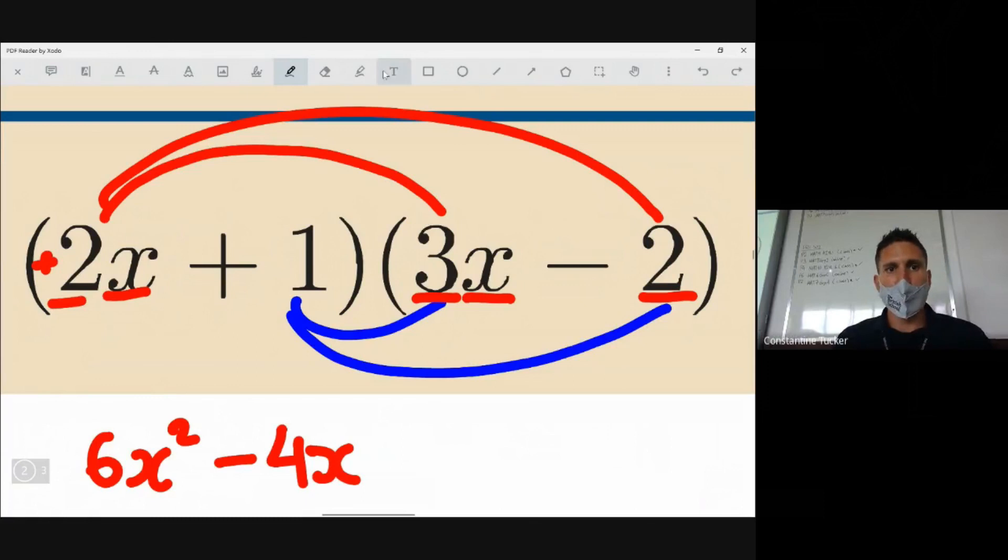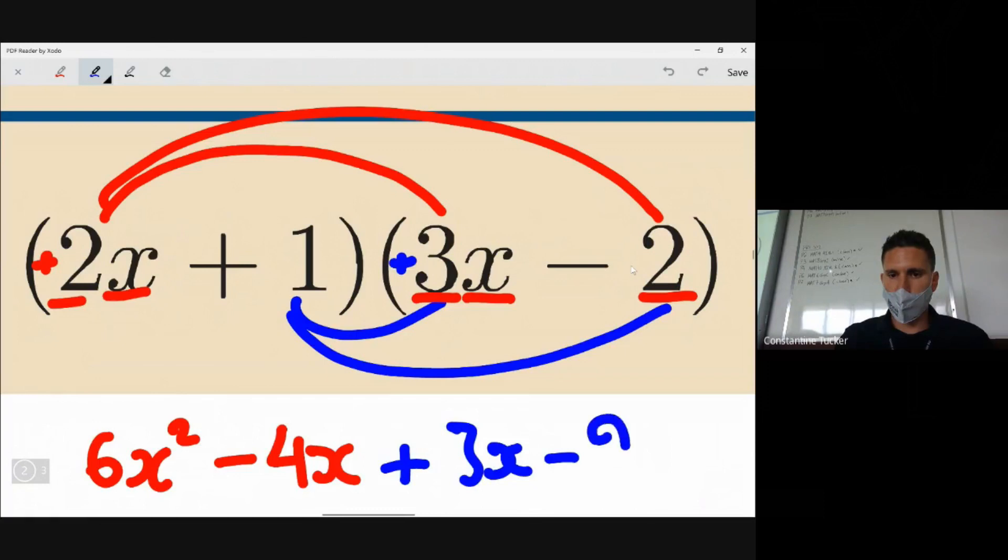Moving on to the blue stuff. Now this is positive 1 times positive 3x. There's a tiny invisible times there. So positive 1 times 3x is plus 3x. Often students will just write 3x and not be sure what sign to put, so just write that bit. Remember, it's plus - if this were minus, you would put a minus. Then finally, plus 1 times negative 2, negative 2.